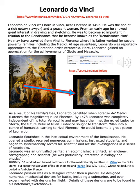He may have travelled from Vinci to Florence where his father worked for several powerful families including the Medicis. At the age of 17, he was reportedly apprenticed to the Florentine artist Verrocchio, who we now know also worked for the Medicis. Here Leonardo gained an appreciation for the achievements of Giotto and Masaccio — the learning of the early Renaissance — and built that knowledge to develop his own style.